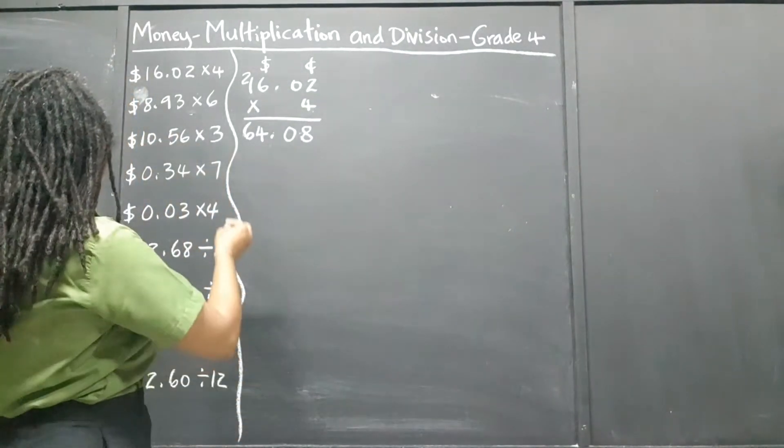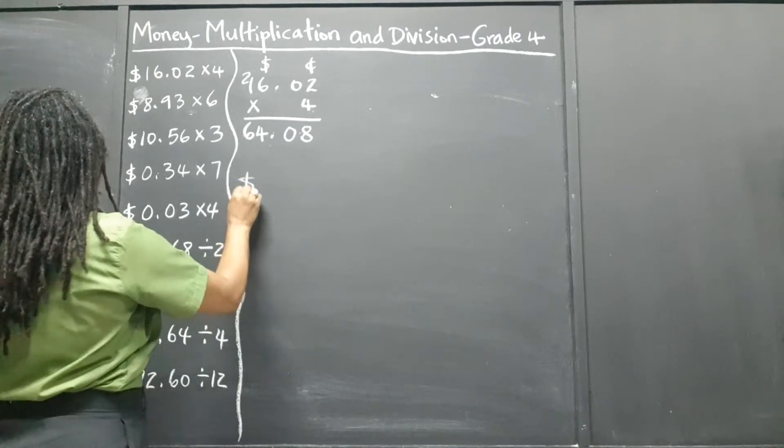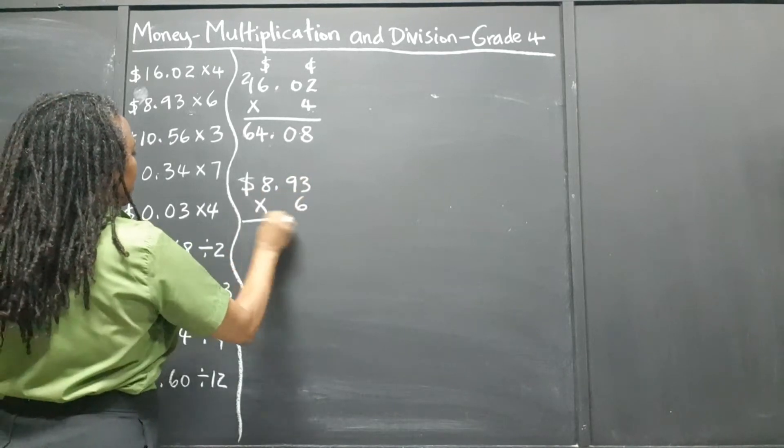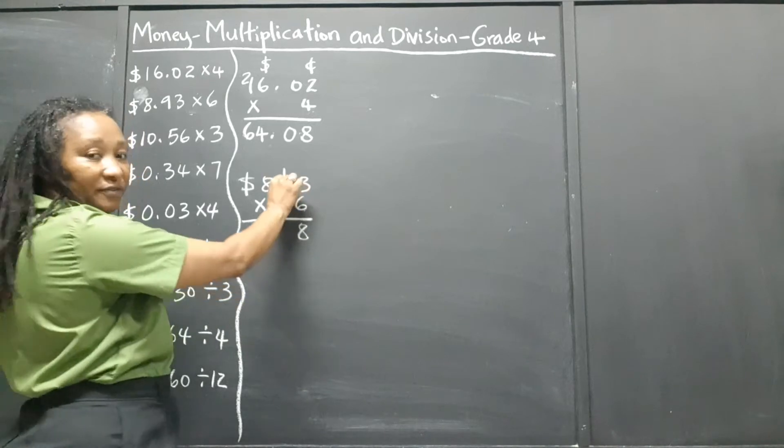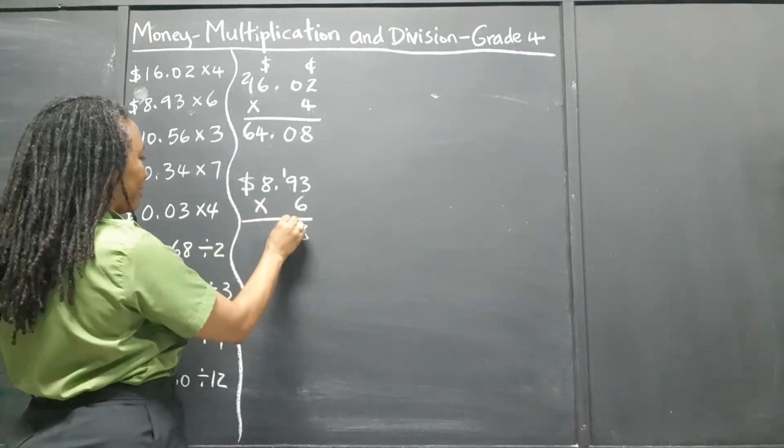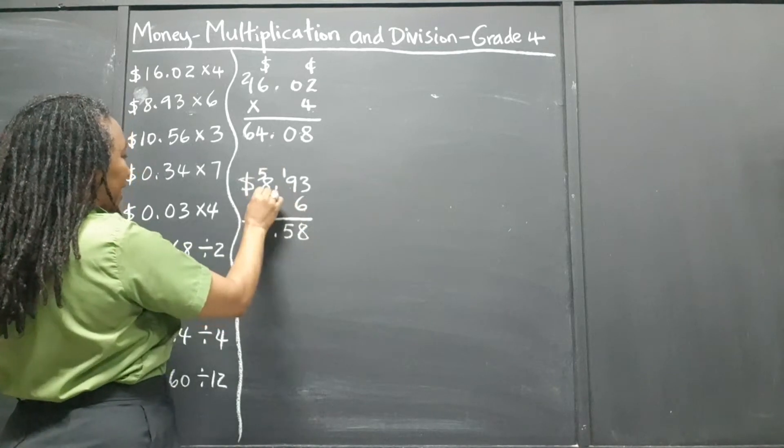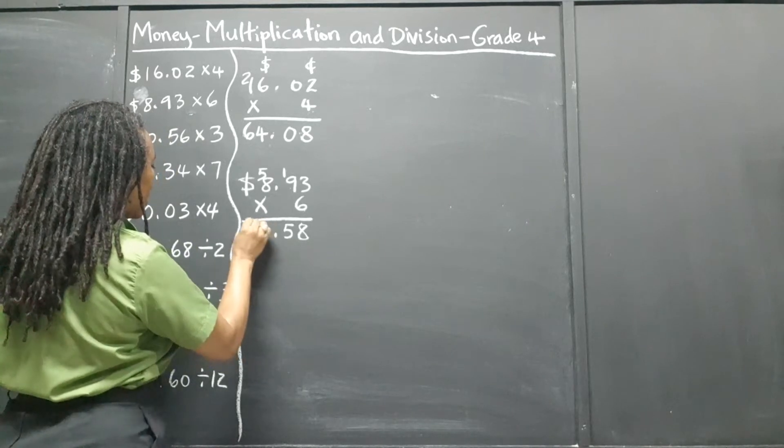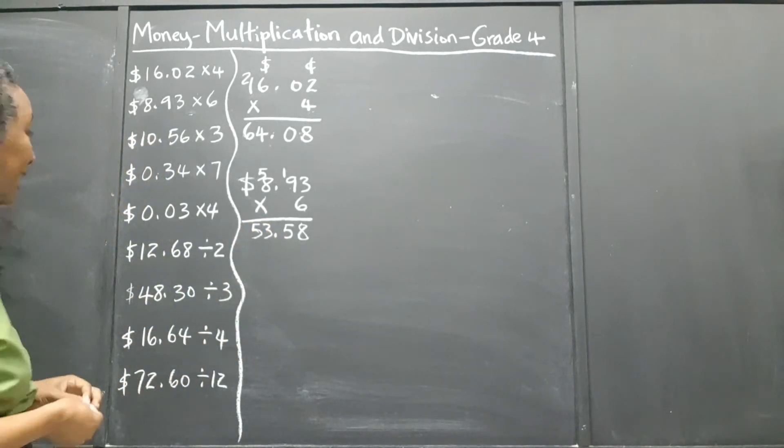Now, $8.93 times 6. 6 times 3 is 18. 6 times 9 is 54, and 1 is 55. 6 times 8 is 48, and 5 is 53. So that's $53.58.